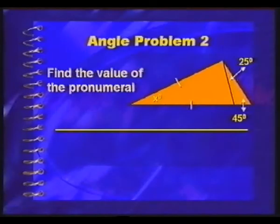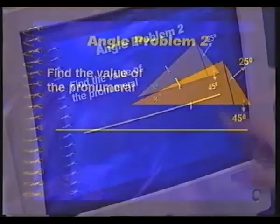Let's now look at number 2. A little bit more difficult. We have here a triangle where we know two angles. One is 45, the other one is 25. We've got these sides the same.